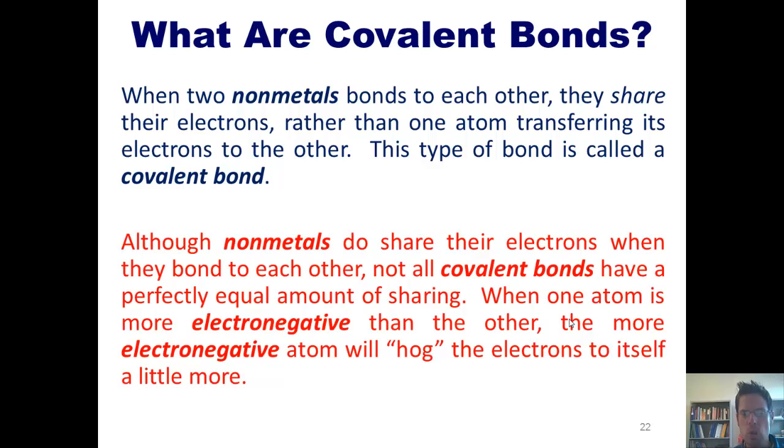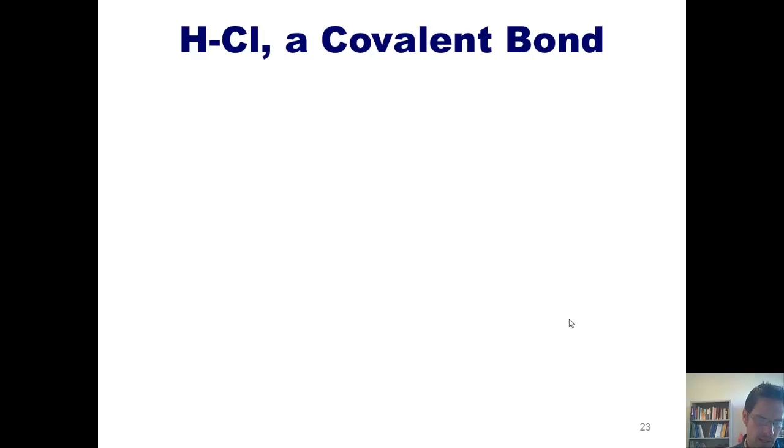Although nonmetals do share their electrons when they bond to each other, not all covalent bonds have a perfectly equal amount of sharing. When one atom is more electronegative than the other, the more electronegative atom will hog the electrons to itself a little more. Let's take a look at one example of a covalent bond by comparing sodium chloride, NaCl, with HCl. What's the difference?